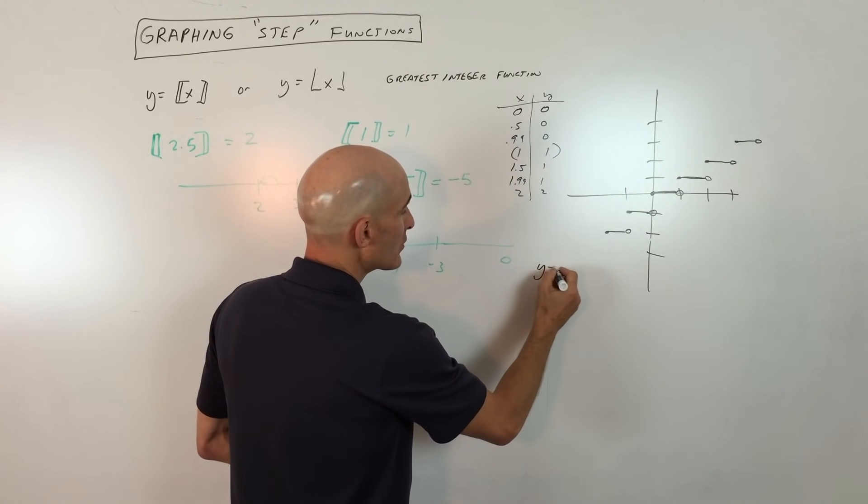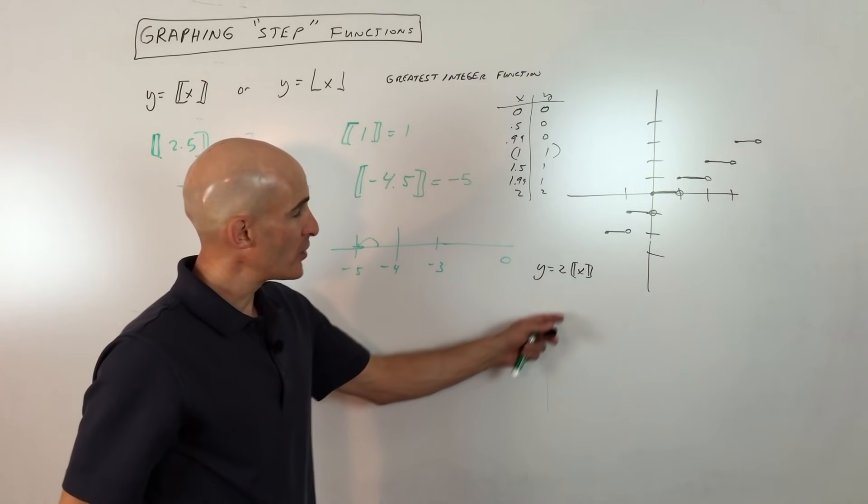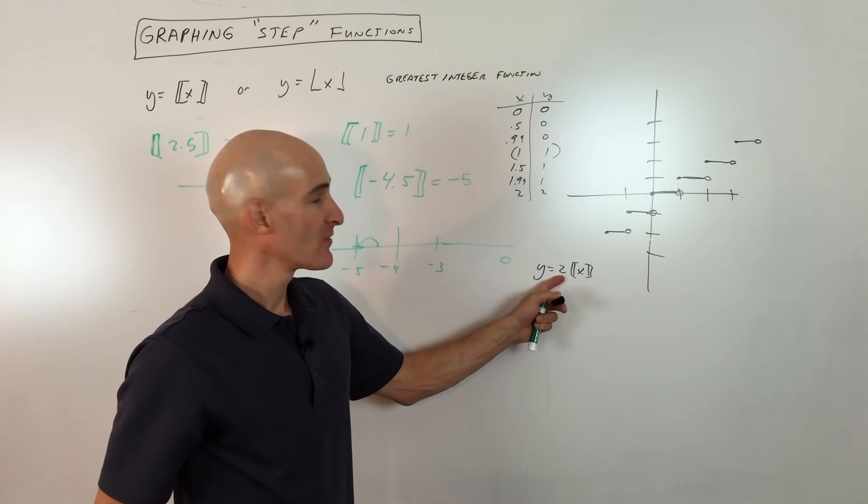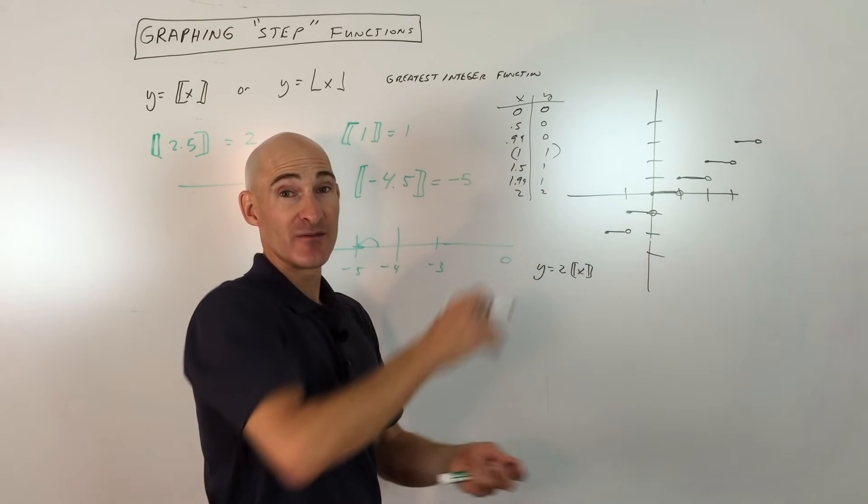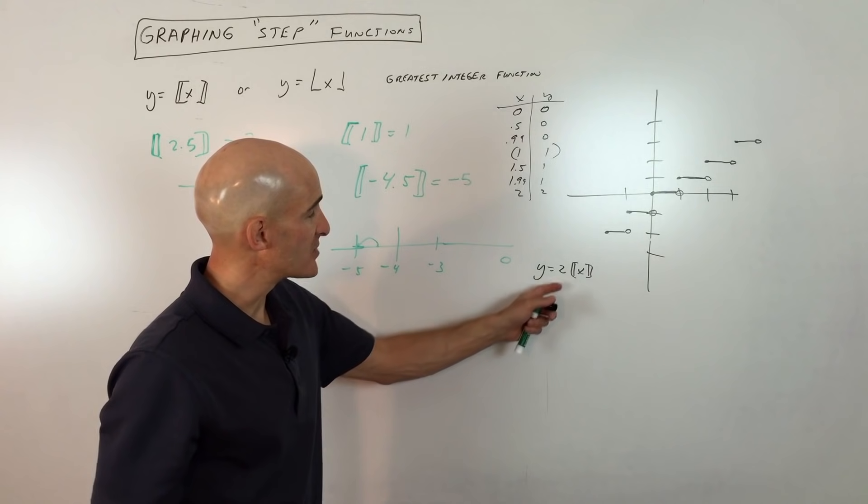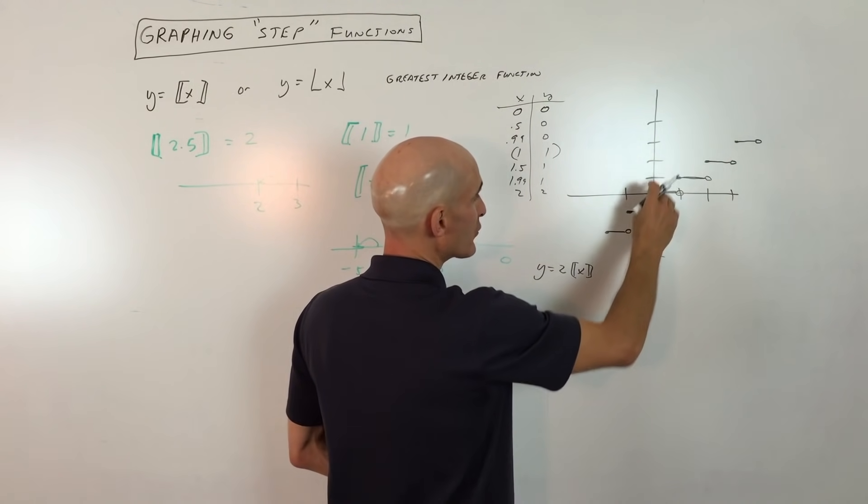Now I just want to show you how to do a couple transformations of this function here. So say you wanted to graph y = 2⌊x⌋. What do you think this 2 does to the graph? Well, if you said that it stretches it vertically by two times you're absolutely right.